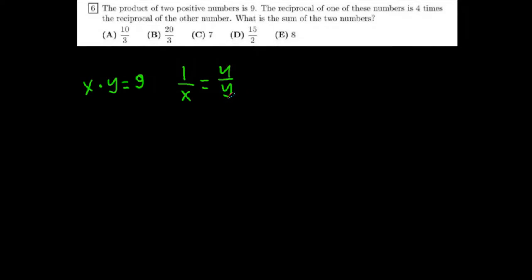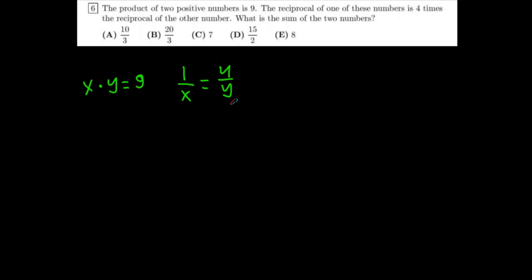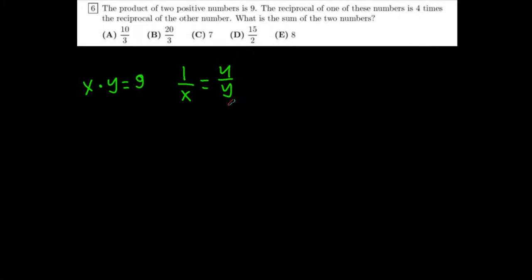Okay. So now we have two equations and two unknowns. So now we can solve this. So we can first cross multiply. And we get one times y, which gives us just y, equals four times x, which is just four x. And now we have what y equals. Now we can plug this into our previous equation. And now we have x times four x equals nine. So now we just do x times four x, which gives us four x squared equals nine.